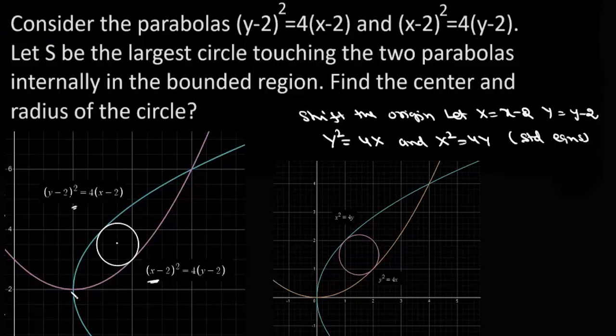So basically we have shifted the origin to (2,2) and now this is our new origin. And the equations we have are Y² = 4X and X² = 4Y.